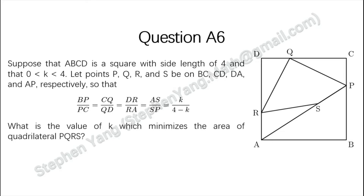So the question is: suppose that ABCD is a square with side length of 4, and K is greater than 0 and less than 4. Let P, Q, R, and S be on BC, CD, DA, and AP respectively, so that BP over PC equals CQ over QD equals DR over RA equals AS over SP. All four of these equal K over (4 minus K). It is asking you what is the value of K which minimizes the area of quadrilateral PQRS.